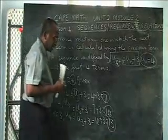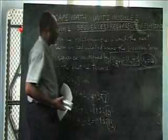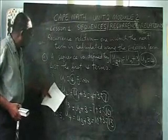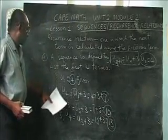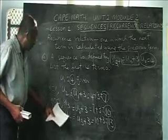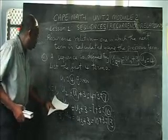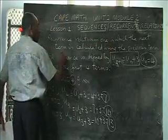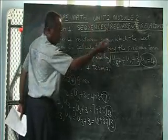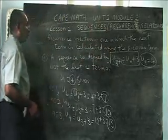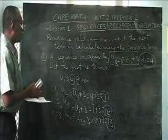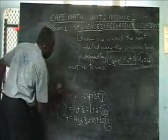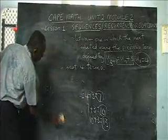For some people that might be a little tricky. But if you followed what we did, you notice that to get the second term we used the first, to get the third we used the second, and to get the fourth we used the third. This satisfies the definition: the next term is calculated using the previous term. If the previous term is wrong, errors will carry through the problem.